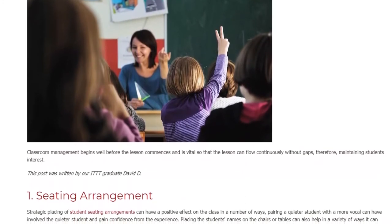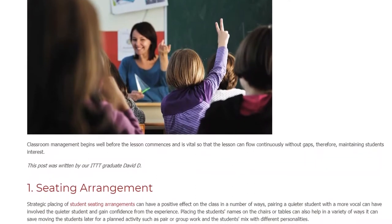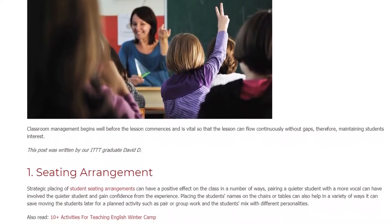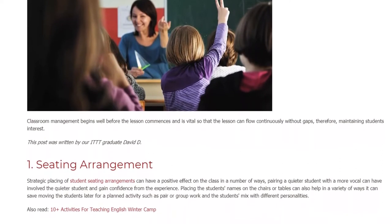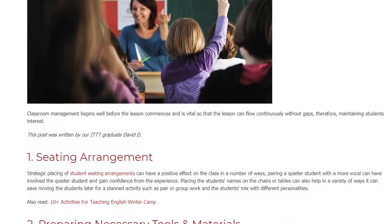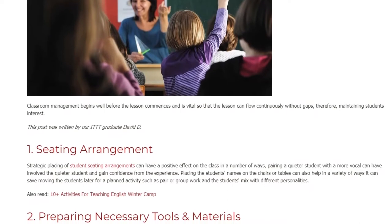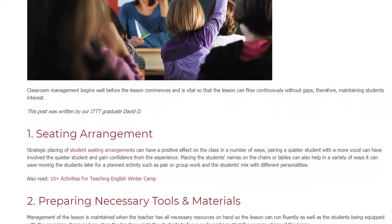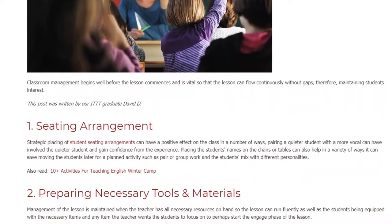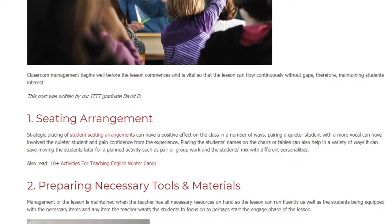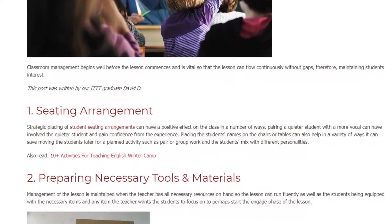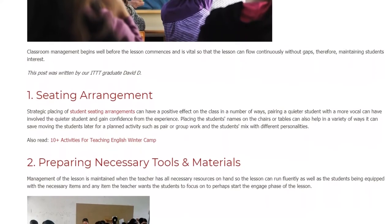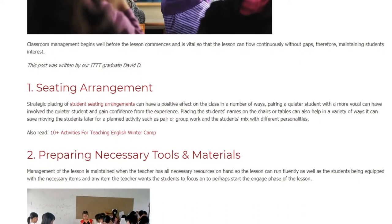1. Seating Arrangement. Strategic placing of student seating arrangements can have a positive effect on the class in a number of ways. Pairing a quieter student with a more vocal one can involve the quieter student and help them gain confidence. Placing students' names on the chairs or tables can also help save time when moving students for planned activities such as pair or group work, and ensures students mix with different personalities.